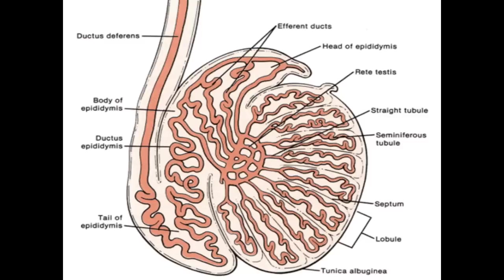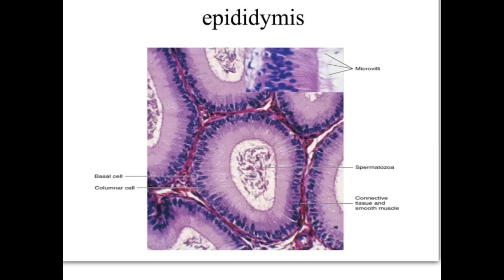After production of sperms in the seminiferous tubules, they pass to the rete testis (rete meaning reticulum), present in the mediastinum testis. Then they pass to the vasa efferentia, which collect into the epididymis, and then pass through the vas deferens.